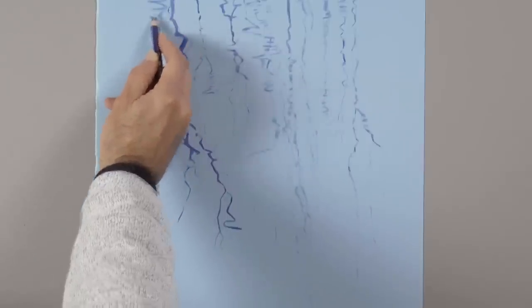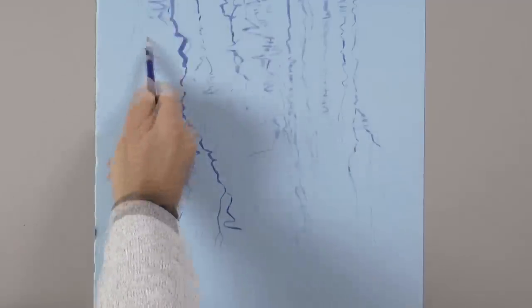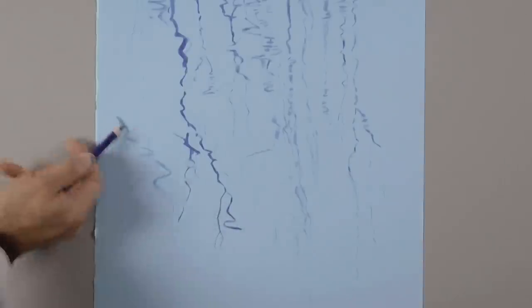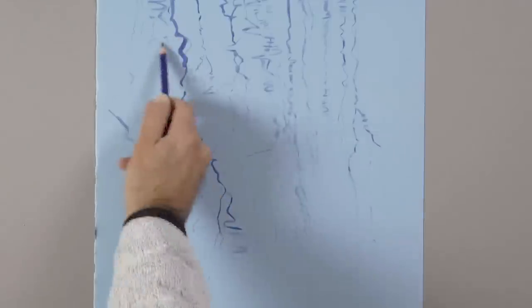The more wavy the lake, the more broken and distorted should be the branches. To the point where with big waves, there would be no more visible reflection.